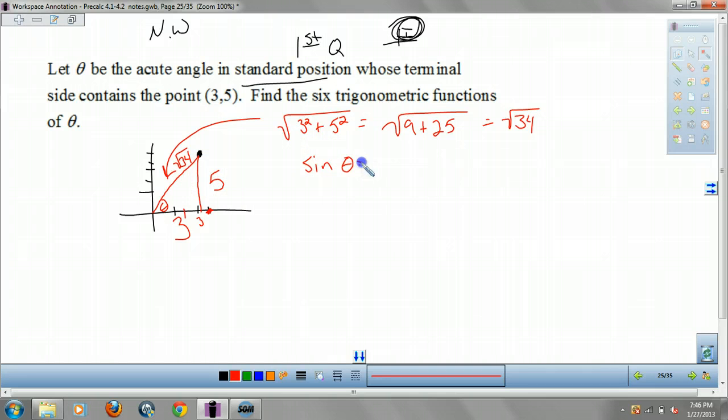So that means sine of theta, that's your opposite over hypotenuse, 5 over square root of 34. So that means cosecant is the reciprocal of that, square root of 34 over 5.